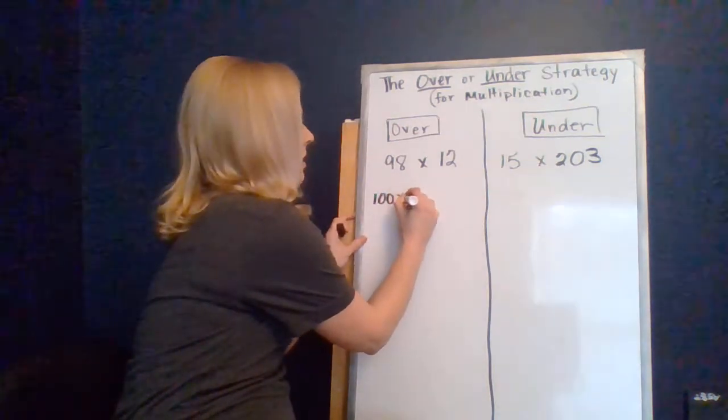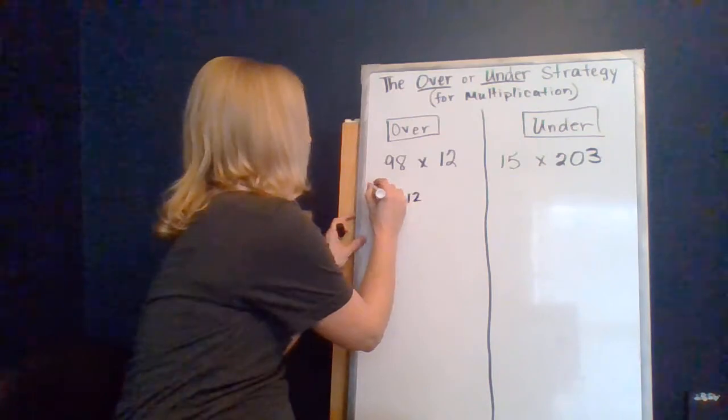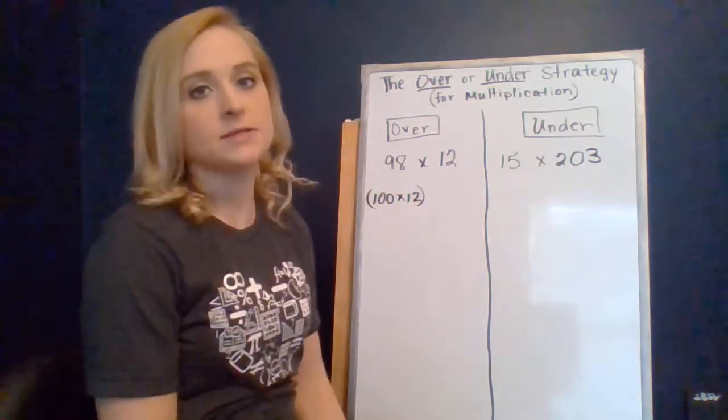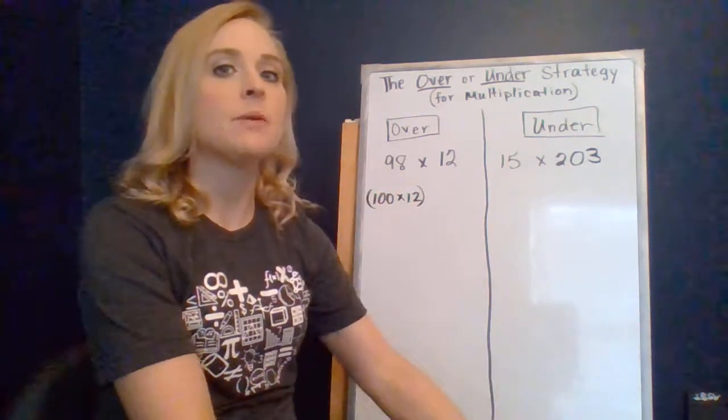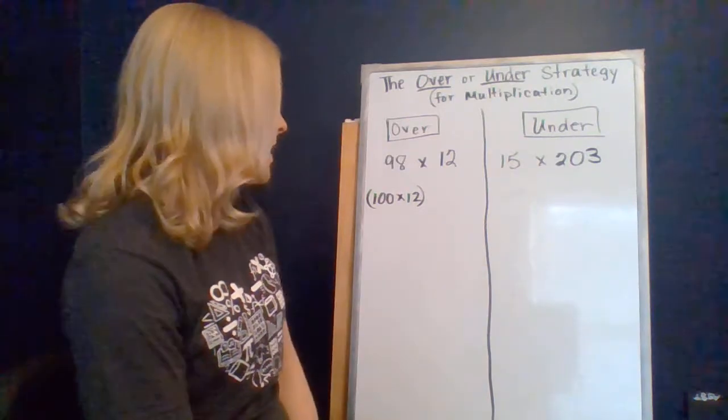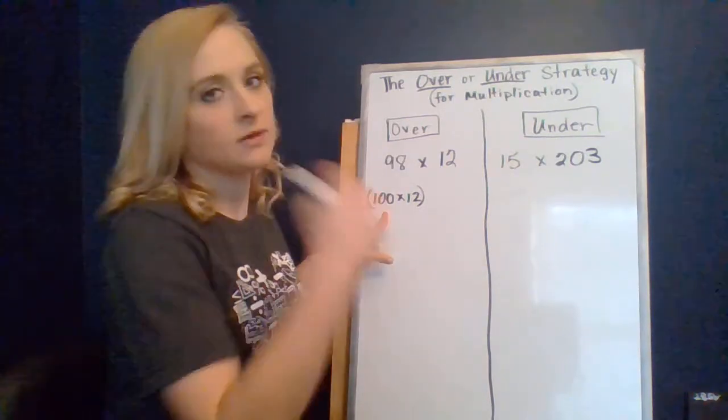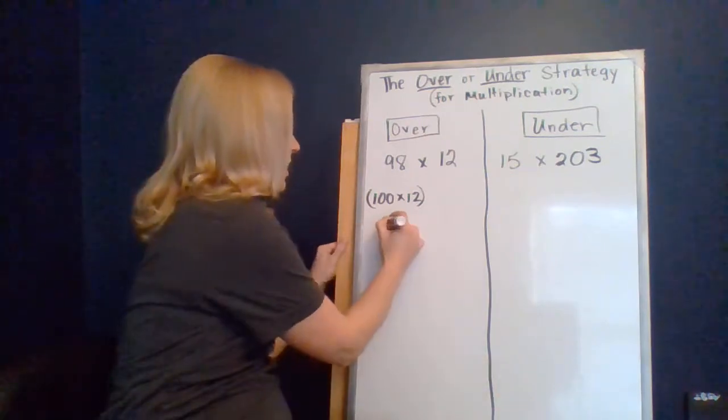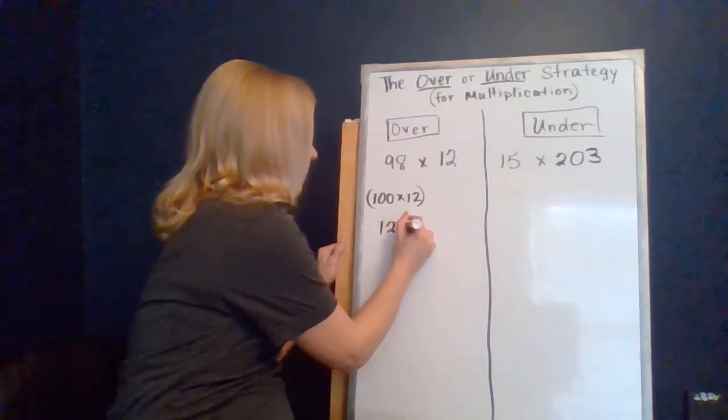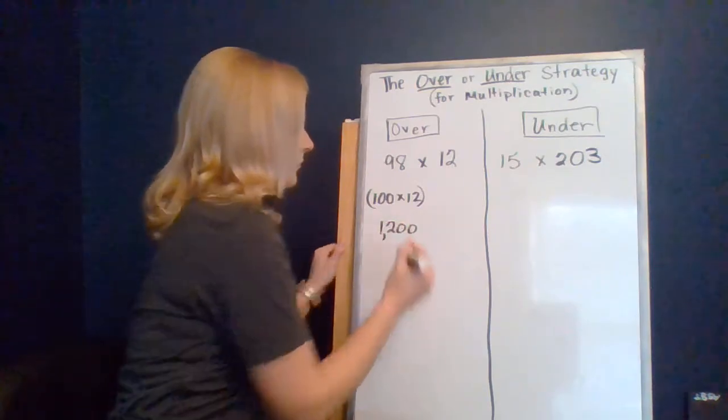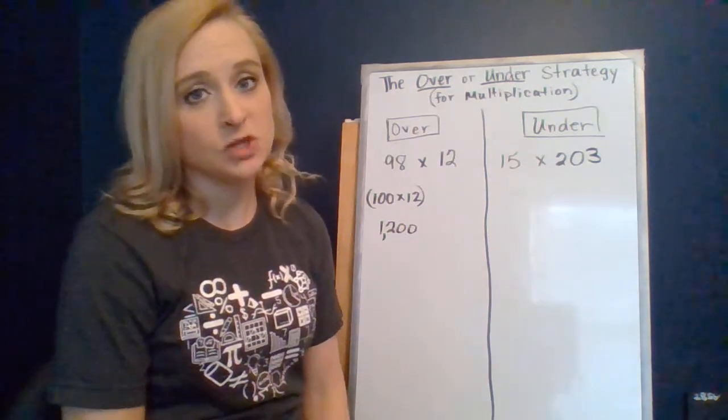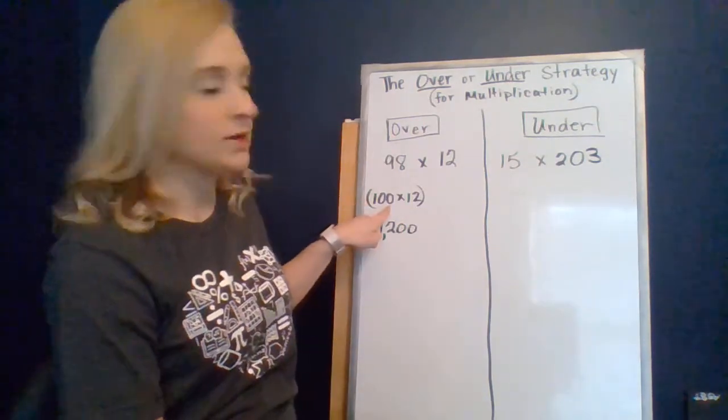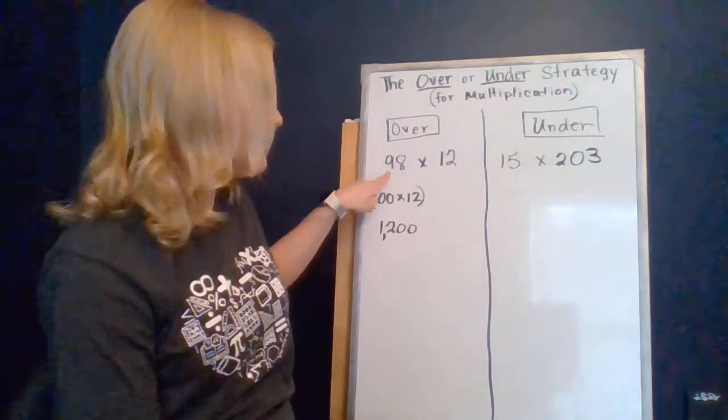We know that 100 is very simple to multiply because of the patterns of place value. So we can quickly mentally figure out 100 times 12. 100 times 12 is 1200, right? But that's too much. We don't have 100 egg cartons at the store. We only have 98.